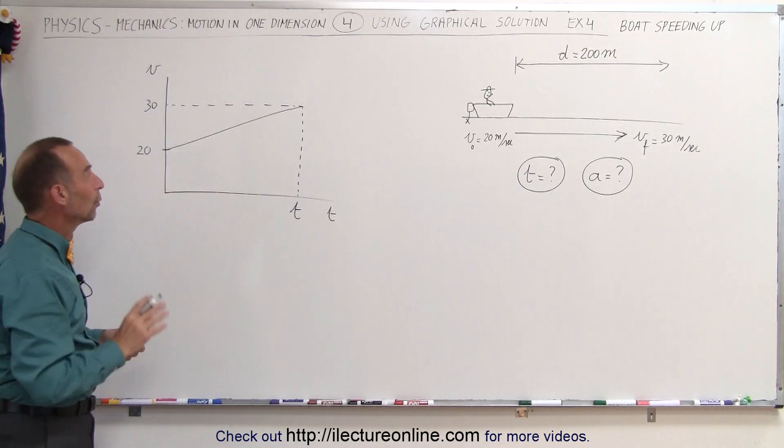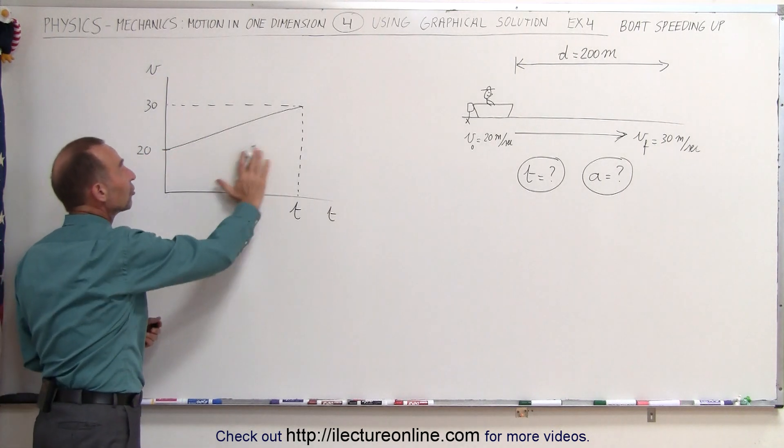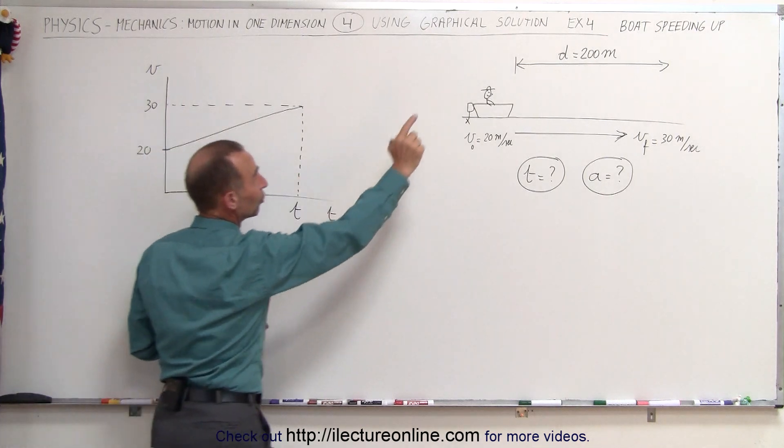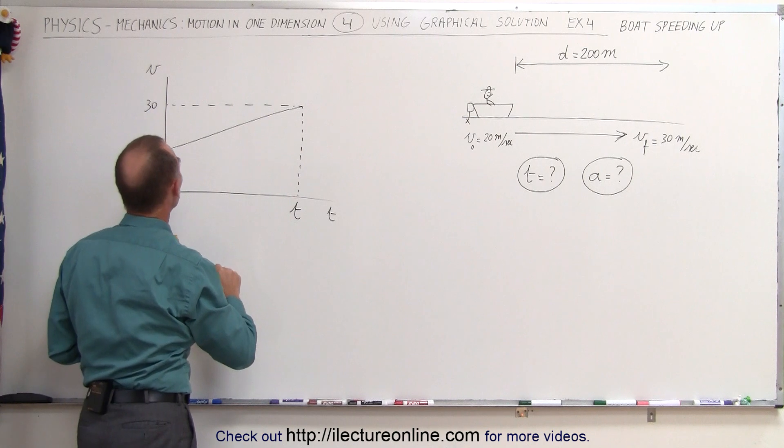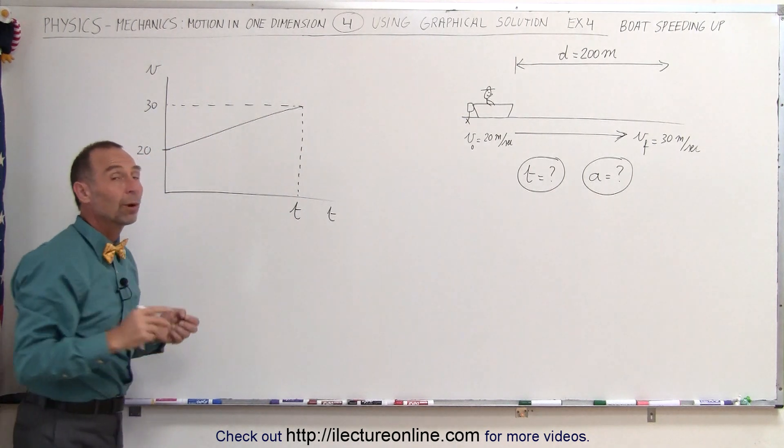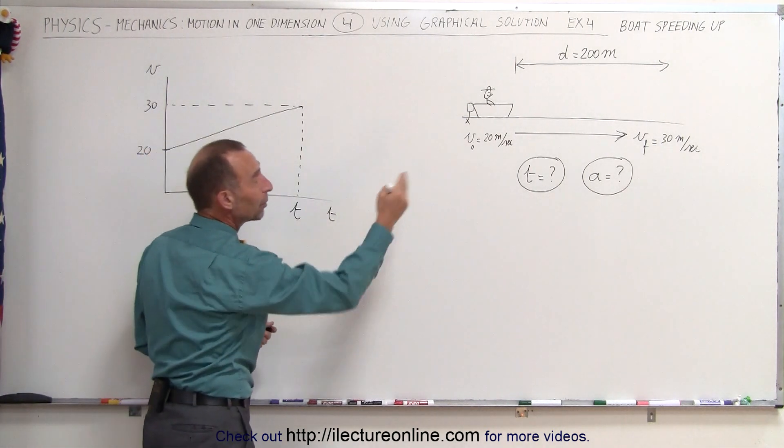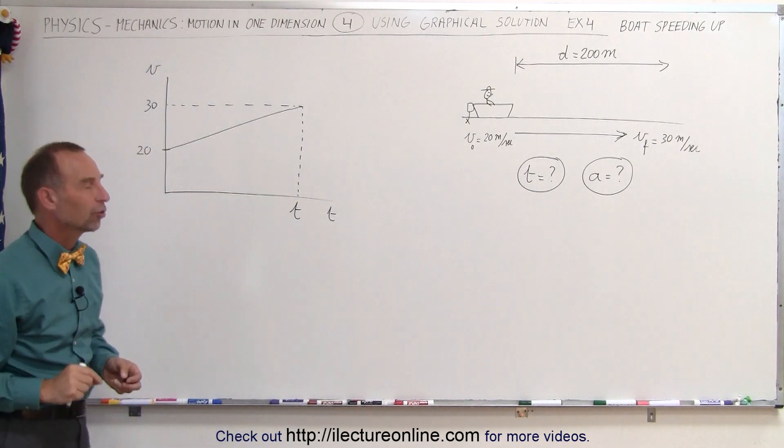And so now we realize that the area underneath this curve represents distance. Therefore this area represents the 200 meters and then the time is what we're looking for. The slope of this graph will represent acceleration. So once we know the time we'll be able to calculate the acceleration from finding the slope.